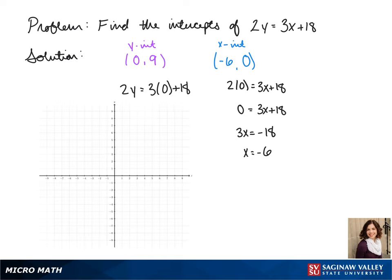So our y-intercept is 9 and our x-intercept is negative 6. To see what our graph looks like, we can plot our intercepts and connect the points.